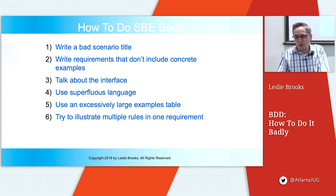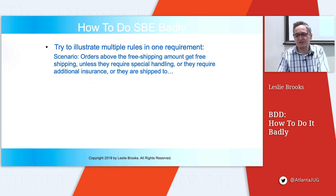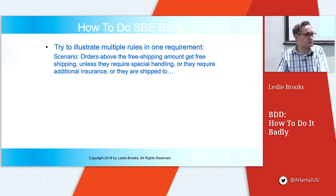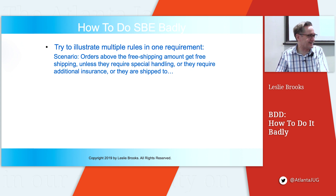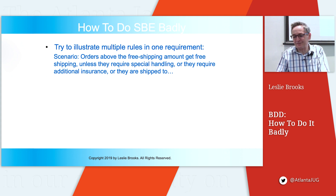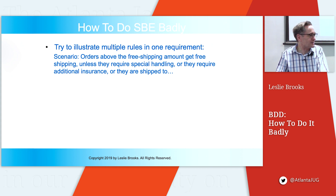Try to illustrate multiple rules in one requirement: 'Scenario: orders above the free shipping amount get free shipping, unless they require special handling, or additional insurance, or are shipped to...' Do you think you can write a clear requirement illustrating all of these special cases? How large will your examples table be? I would definitely split this into several simple requirements — one for free shipping, one for special handling, one for additional insurance, one for remote shipping destinations.